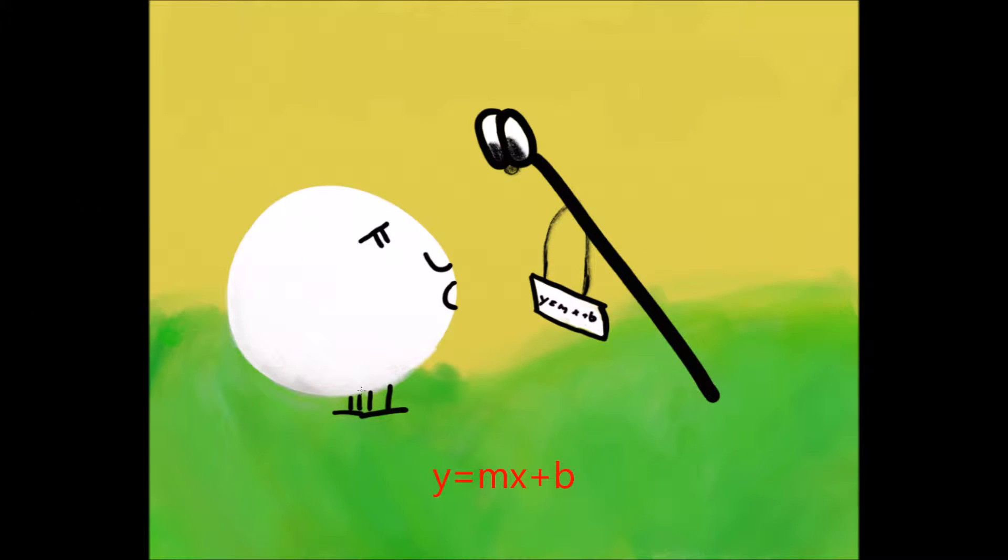Linear functions y equals mx plus b, tis the easiest function you'll ever see. The slope is m, the y-intercept b, across an axis it has symmetry. You can rearrange it in ways that aren't the norm, like for instance, point-slope form.